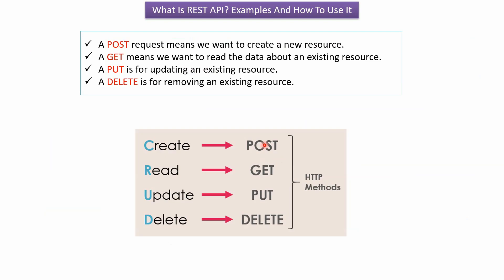The HTTP methods are POST, GET, PUT, and DELETE. A POST request means to create a new resource. A GET request means we want to read data about an existing resource. A PUT request means to update an existing resource. A DELETE request means to remove an existing resource. These form the CRUD operations: Create, Read, Update, and Delete.